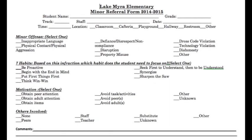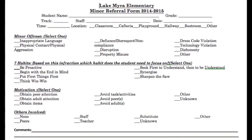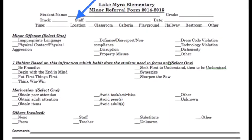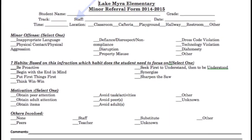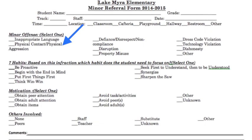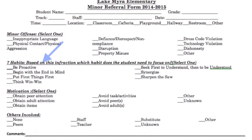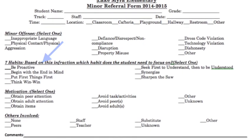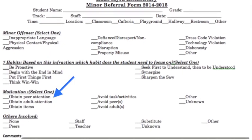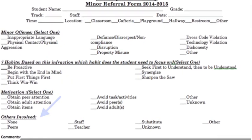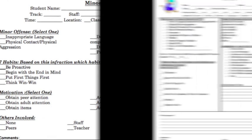Let's take a look at the minor form. Make sure that the minor form is being filled out in all areas. This helps us to track the child and where they need help the most.